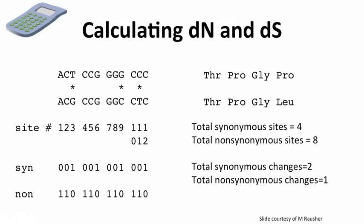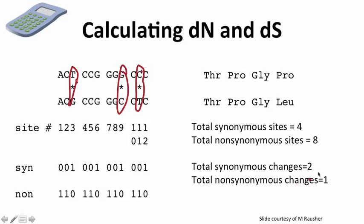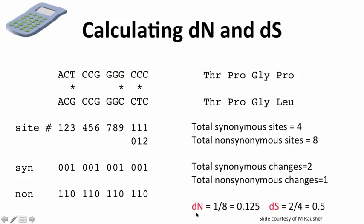So we have 4 synonymous sites and 8 non-synonymous sites. When we look at the actual changes, we have two synonymous changes and one non-synonymous change. dN is non-synonymous changes over non-synonymous sites: 1 over 8, or 0.125. dS is synonymous changes over synonymous sites: 2 over 4, or 0.5. So dN/dS is 0.125 divided by 0.5, which equals 0.25 — a fairly typical dN/dS value.